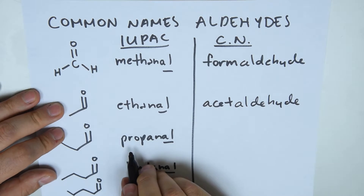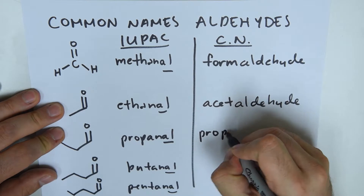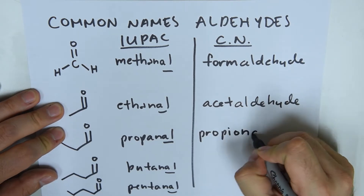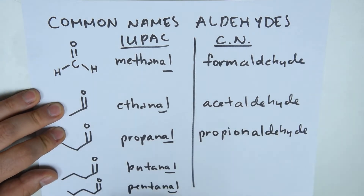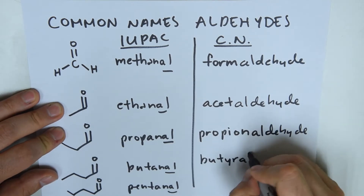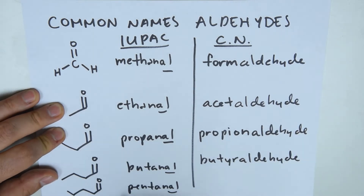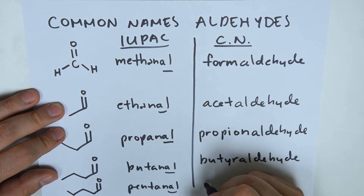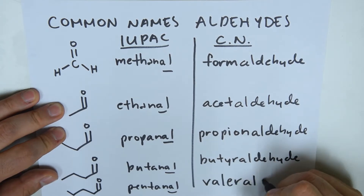The three-carbon prefix 'prop' is substituted for 'propion', giving propionaldehyde. The 'but' prefix is substituted for 'butyr', giving butyraldehyde. And the five-carbon prefix 'penta' is substituted for 'valer', giving valeraldehyde.